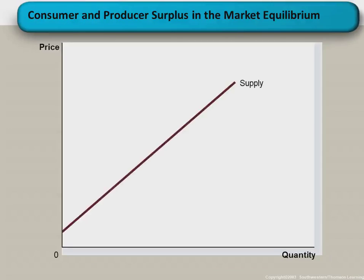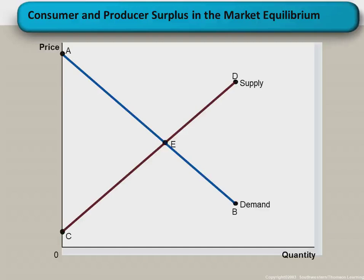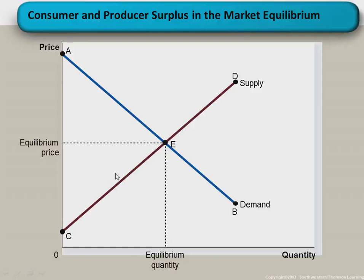We can now look at the total surplus. Total surplus is the summation of the consumer surplus and the producer surplus. With the supply curve and the demand curve intersecting at equilibrium point E — where we define equilibrium price and equilibrium quantity — the area above the equilibrium price is the consumer surplus, and the area below the equilibrium price but above the supply curve is the producer surplus. Together, these form the total surplus in the market.